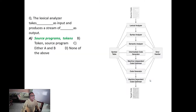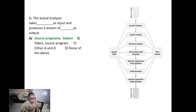Next slide. The lexical analyzer takes source code as input and produces a stream — this is very easy. The lexical analyzer parses the source program and produces a stream of tokens. Sometimes it is called a lexeme, but tokens is the best answer. So this is the compiler; the lexical analyzer is the first stage. Any question you can raise right now.